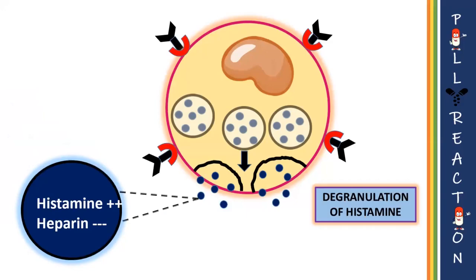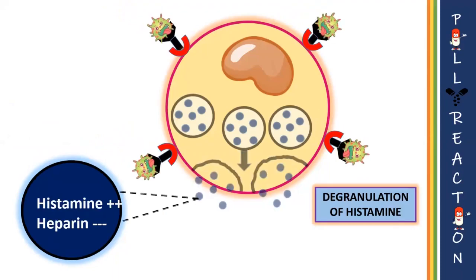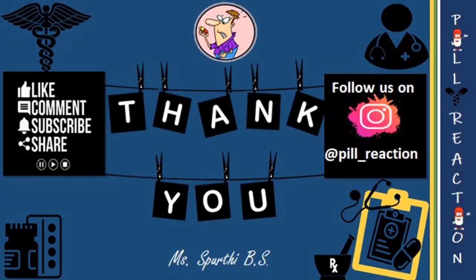Therefore, the degranulation of histamine is seen only when an antigen binds to the IgE antibody. For more such pill infotainment videos, please subscribe to our channel and click the bell icon to get new video updates. Stay tuned, thanks for watching!